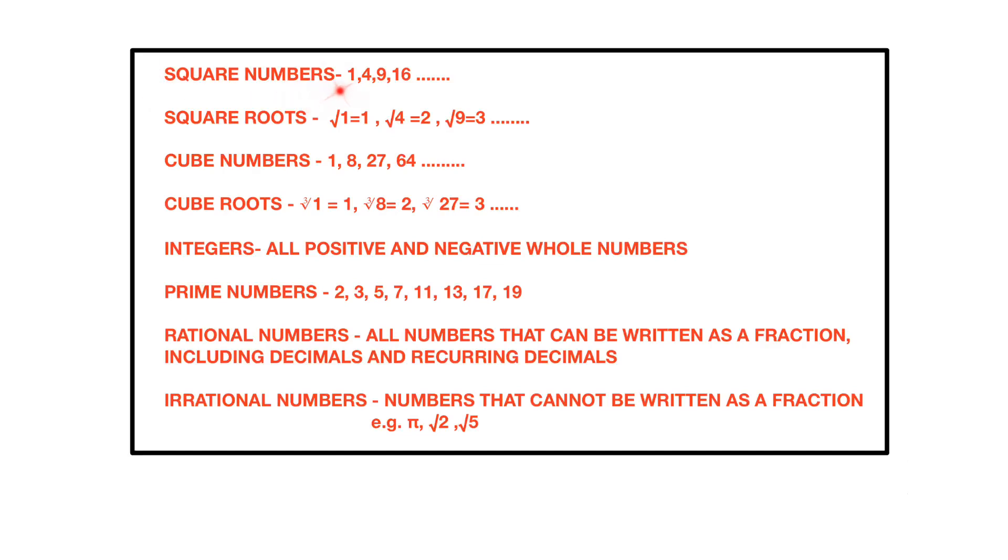Square numbers are 1 multiplied by 1, so 1 is a square number. 2 multiplied by 2 is 4, so 4 is a square number. 3 multiplied by 3 is 9, so 9 is a square number. Square root of 1 is 1, square root of 4 is 2, square root of 9 is 3.